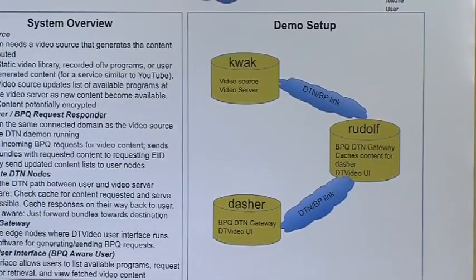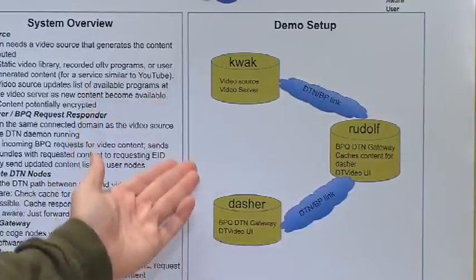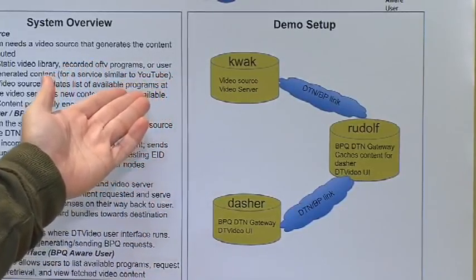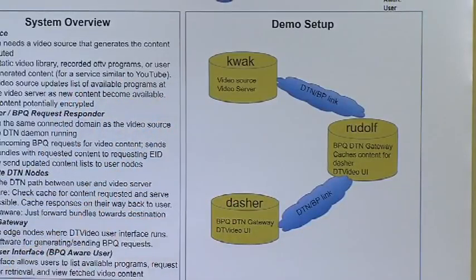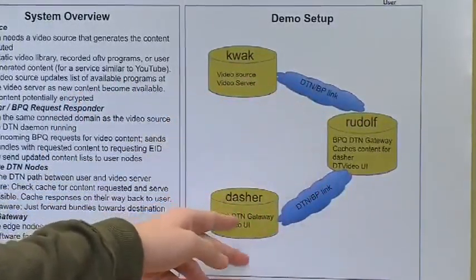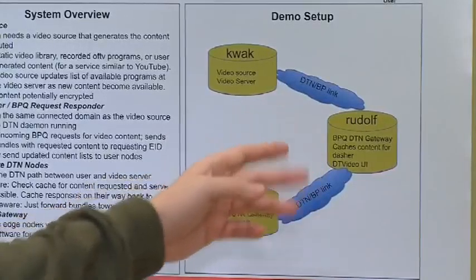So our demo setup looks like this. We have three nodes. Quack is the video source that has all the content on it. Rudolf and Dasher are two DTN nodes that are connected like this. All the traffic to Dasher goes through Rudolf like that.